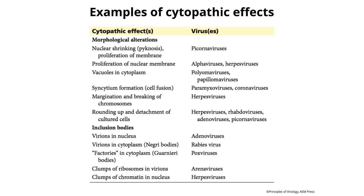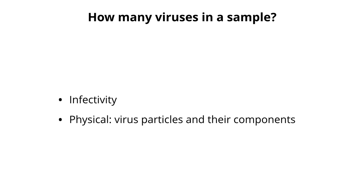Not every virus causes cytopathic effects — many cause nothing visible in an infected cell; the cells can look pretty normal. So how do we know cells are infected? We have to measure the virus particle somehow. We can ask how many viruses are in a sample — measuring infectivity, or if we lack an infectivity assay, we measure the number of physical particles. My favorite is the plaque assay — the most beautiful assay in all of virology.